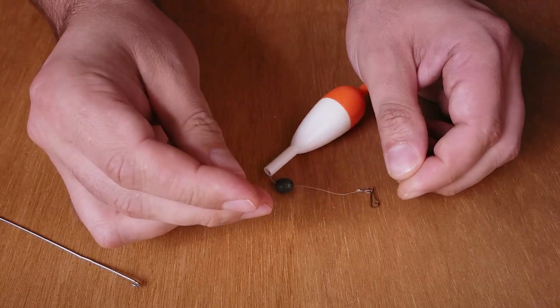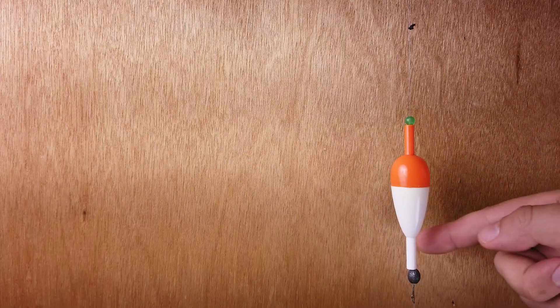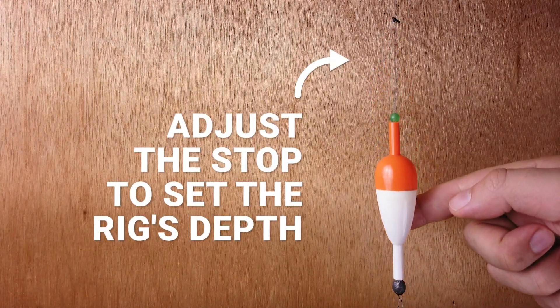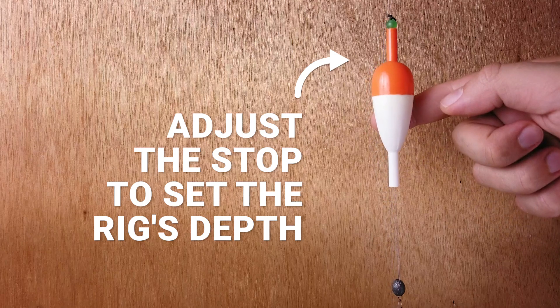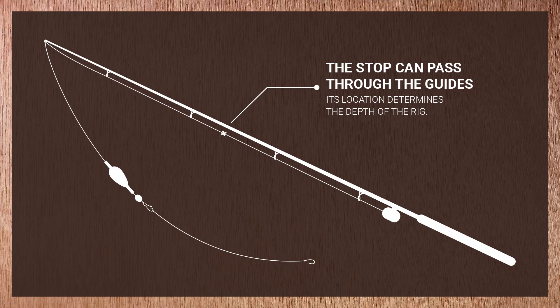This construction allows the float to slip along the line until it hits the stop. And because the stop can easily pass through rod guides, it is possible to set any distance from the hook by adjusting the stop location. The maximum depth of your rig is not limited by the length of your rod.